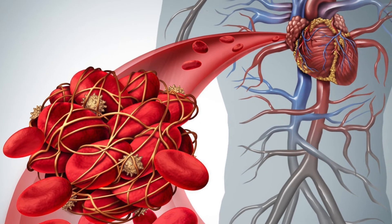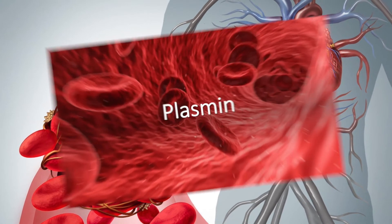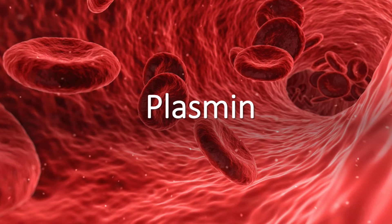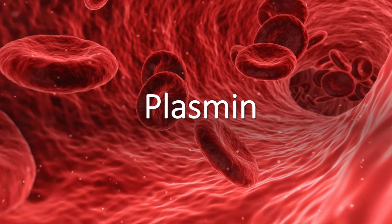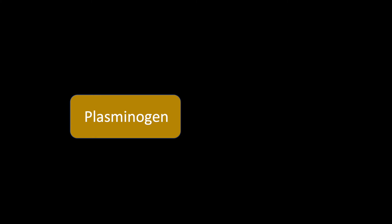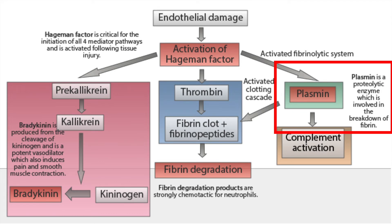But you also wouldn't want excessive clotting, and thus plasmin and the fibrinolytic system come in as a key regulator of fibrin in our body. Plasmin, in its inactive form plasminogen, is a zymogen. The activation of plasminogen is also triggered by endothelial cell injury and the Hageman factor.